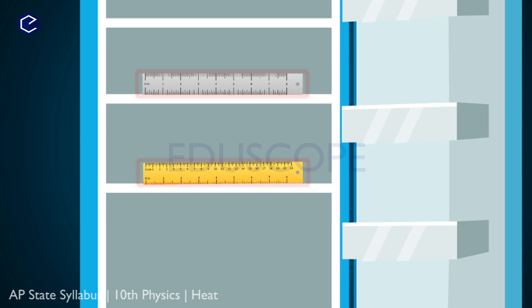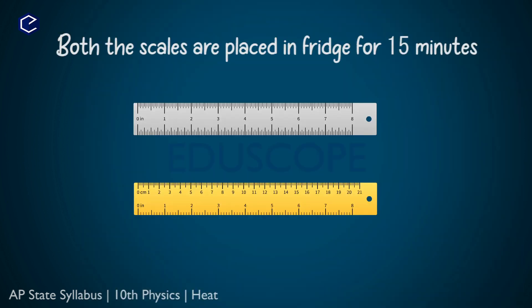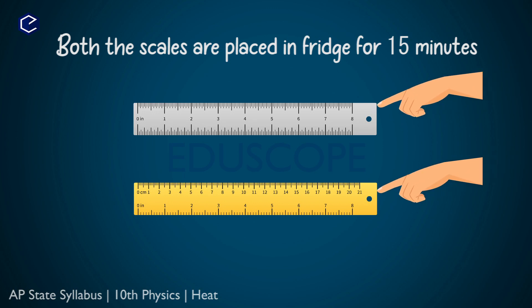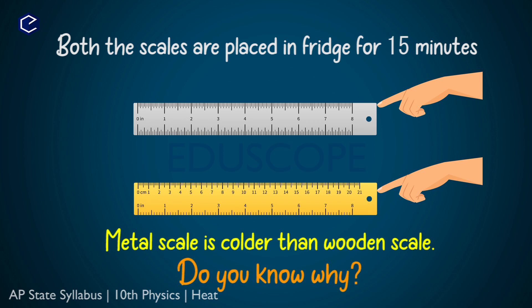In 15 minutes, we will open the fridge door and take out the scales. The scales have been in the fridge for an equal amount of time. Now let's touch them. The reason for any difference is the material — different materials gain or lose heat differently.